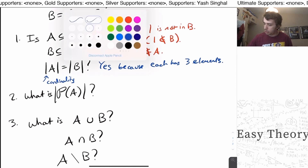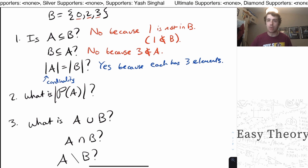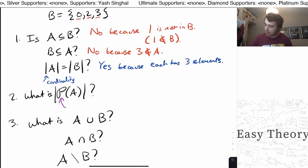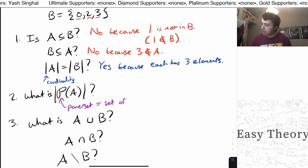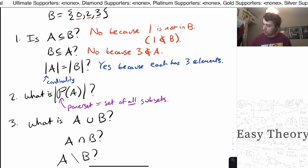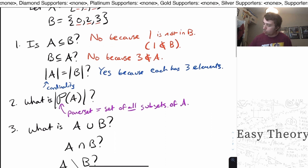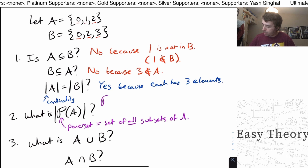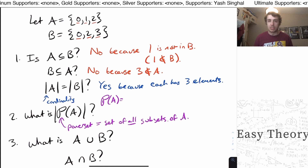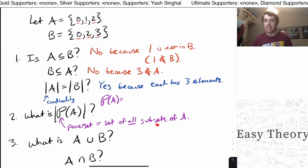Now let's look at this question. The vertical bars mean the number of things in a set. This P symbol is something called the power set — that is the set of all possible subsets of A. So the power set of A is all possible subsets of A written as a set. It is a set itself, but each of the things in it is a subset of A.